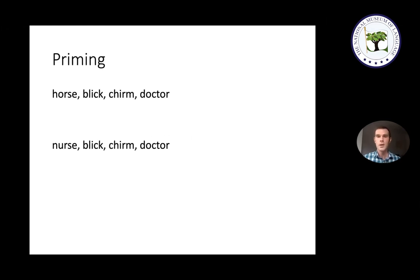For instance, one participant might see: 'horse — real word, blick — fake, cherm — fake, doctor — real.' A second participant might see: 'nurse — real, blick — fake, cherm — fake, doctor — real.' What researchers found is that participants in the second condition recognize the word 'doctor' faster. The reason is that seeing 'nurse' first primes you to expect other medically related words, so when 'doctor' appears, it doesn't surprise you as much and you recognize it faster.